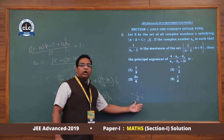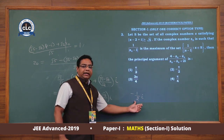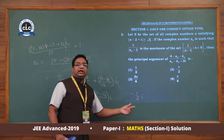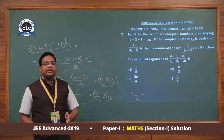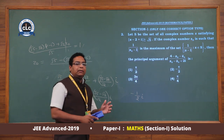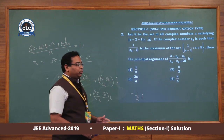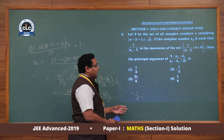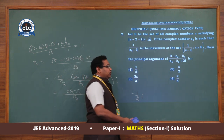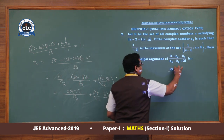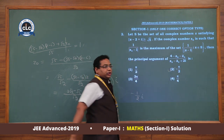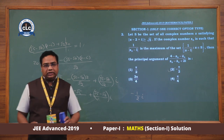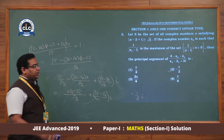This is a purely imaginary number whose imaginary part is negative. So we can say the complex number's principal argument is −π/2, which is your second option. So the second option is correct.